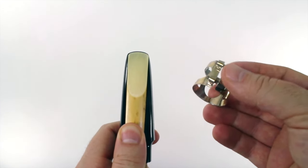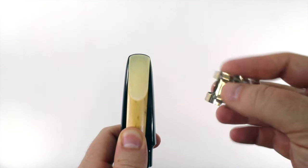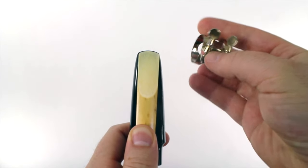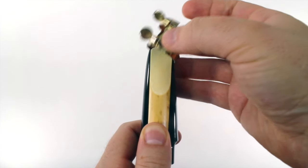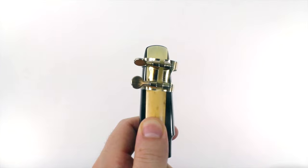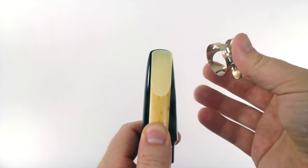The ligature has a smaller end here and a bigger end at the bottom. If you try to put the ligature on upside down it won't go on correctly. You have to make sure that you're putting the big end on first.